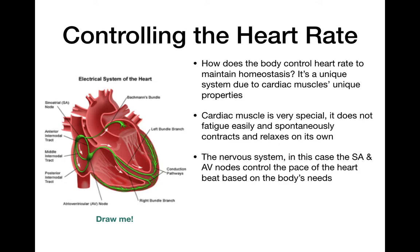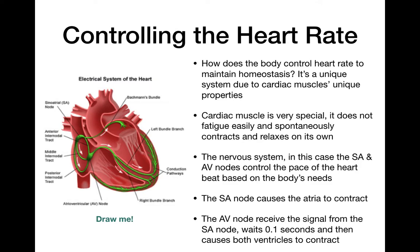The parts that control this are called the SA and AV nodes. Here is the SA node — the sinoatrial node — and that controls the beat of the two atria on each side. And here is the AV node — the atrioventricular node — which controls the beat of the two ventricles. The SA node causes the atria to contract, then sends a signal to the AV node, and that contracts 0.1 seconds later. So the atria contract, the signal goes to the AV node, and the ventricles contract 0.1 seconds after. This gives time for blood to flow down from the atrium to the ventricle before it pumps again — it's a particularly well-organized way of beating the heart.